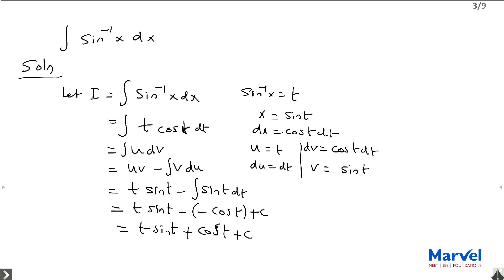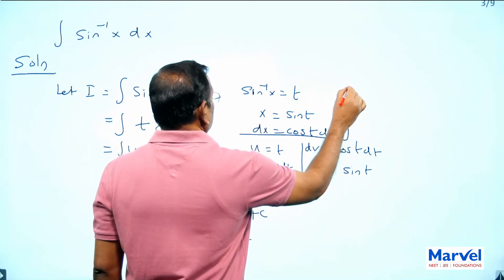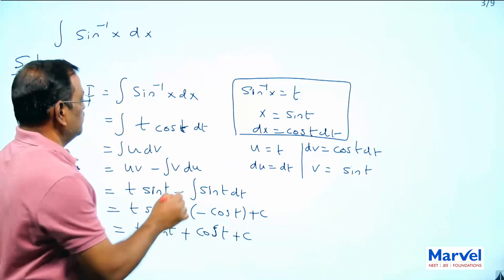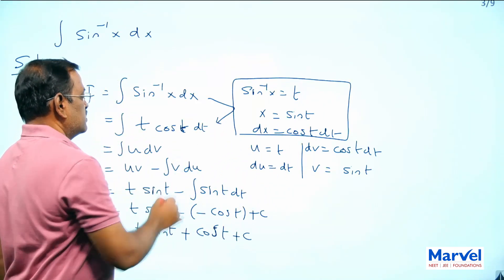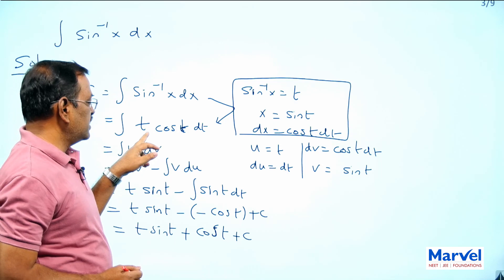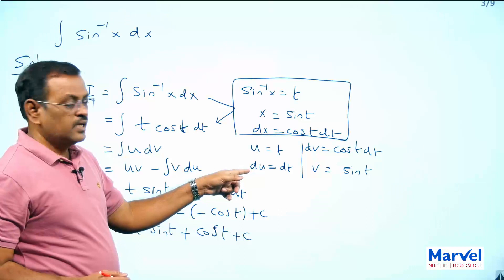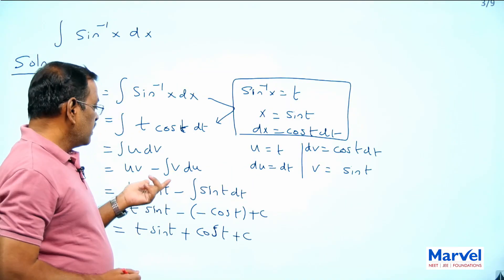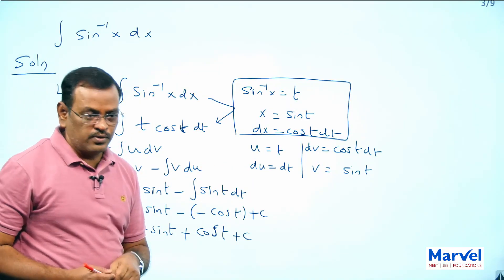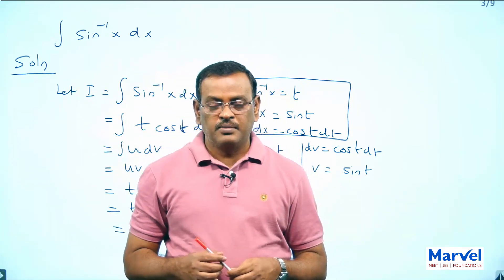Even though the original integrand has only one function, after substitution it contains two functions — algebraic and trigonometric. Now you can apply the integration by parts as per the regular formula, substitute, and simplify. Now you know the technique of how to integrate inverse trigonometric functions using substitution followed by integration by parts.